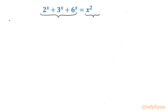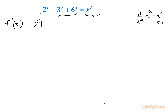Let me consider the derivative first. We know that d/dx of a^x = a^x · ln(a). So f'(x) on the left-hand side is 2^x · ln2 + 3^x · ln3 + 6^x · ln6. The right-hand side derivative is 2x.